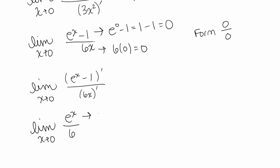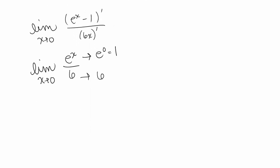Now we check the form again. e to the x goes to e to the 0, which is 1, and 6 stays 6. So we no longer have an indeterminate form — in fact we have a function that's continuous at 0. We can just plug in 0 to get the limit, which gives us e to the 0 over 6, or 1 sixth. And that's it.